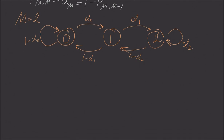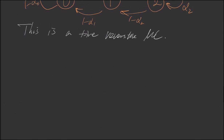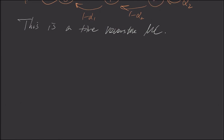We can claim this is a time-reversible Markov chain. To see this — it's not entirely obvious. Let me draw a time diagram to explain what the textbook means. Suppose we're interested in states i and i plus 1. For demonstration purposes, let me draw one more state, say i minus 1.